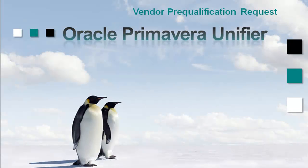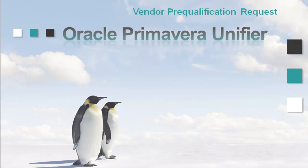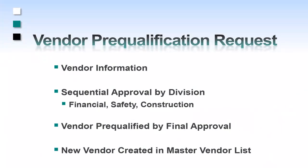Primavera Unifier utilizes the vendor prequalification request to prequalify vendors before they are added to the master vendor list. To utilize this business process, we first have to enter the vendor information, then send this for a sequential approval by each of the divisions within the company — in this example, the financial, safety, and construction divisions. We then prequalify the vendor with the final approval stage, and if they meet all requirements, a new vendor will be created in the master vendor list.